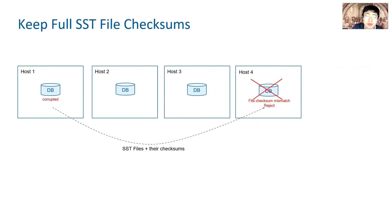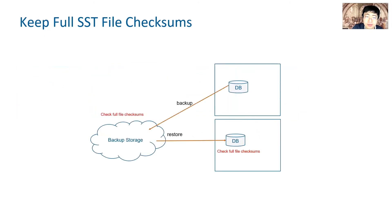One feature we added to help users is full file checksum, which is stored in the DB metadata. When users stream files to another host, they can check the checksum during streaming and reject the file if it is corrupted. The same full file checksum can protect the backup restore process as well.